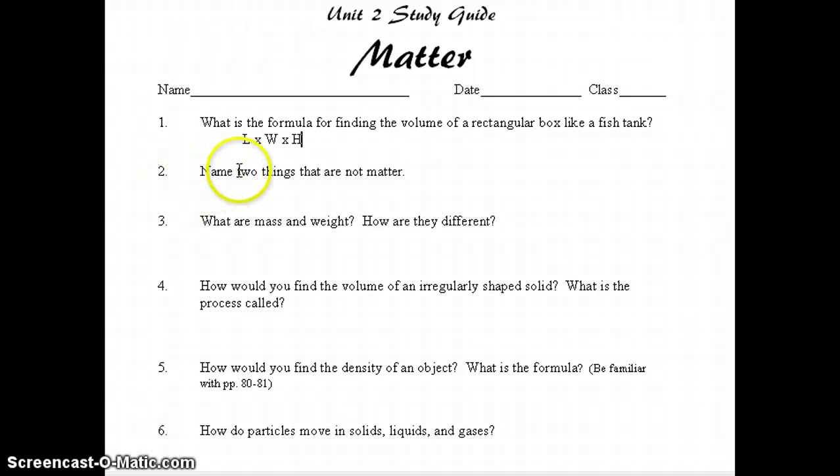Number 2, name two things that are not matter. The correct answer should have been light and sound. Number 3 says, what are mass and weight, and how are they different? The correct answer should have been mass is the amount of matter in an object. Weight is the gravitational force on an object.